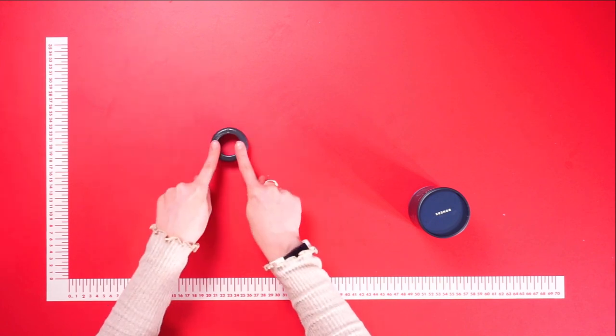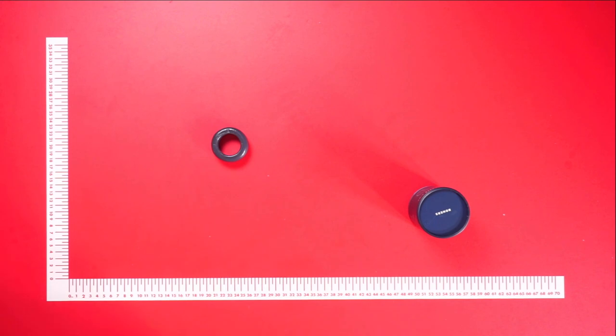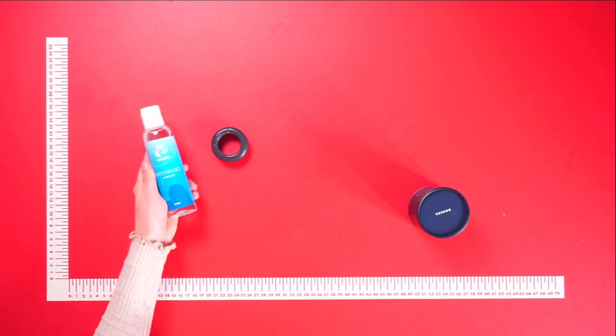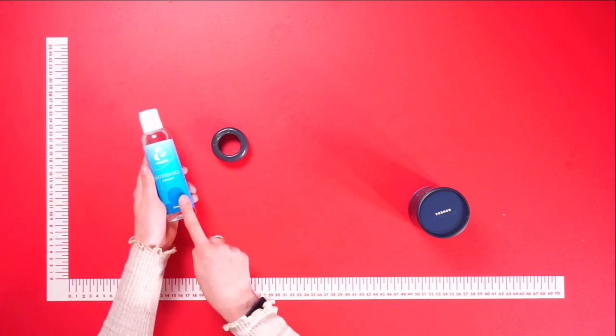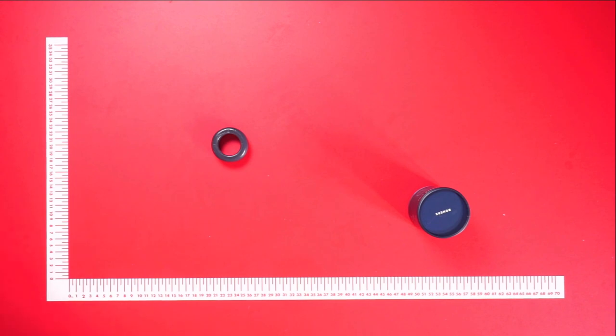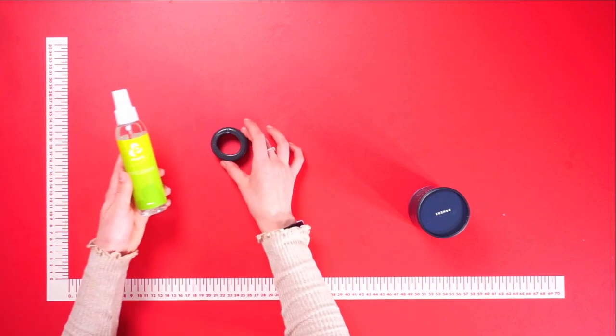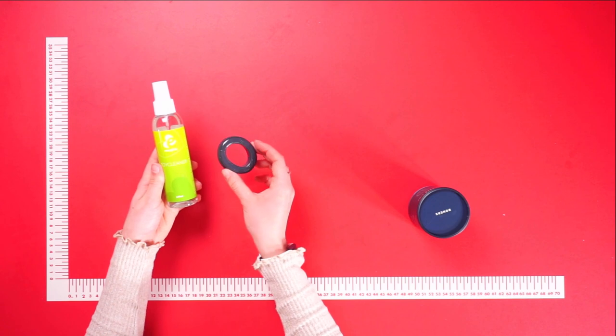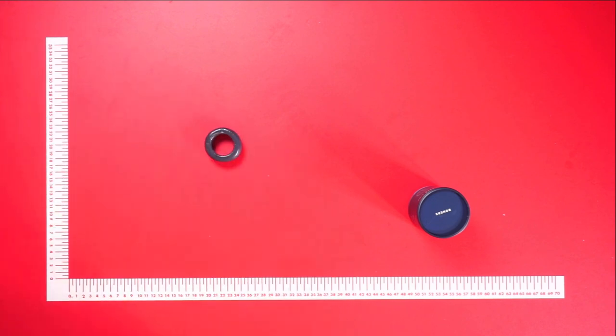When using the ribbed cock ring, we recommend using a water-based lubricant for extra comfort during use. Make sure to clean the cock ring after every use using toy cleaner and a dry lint-free cloth for good hygienic use.